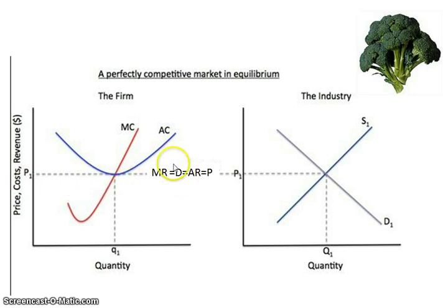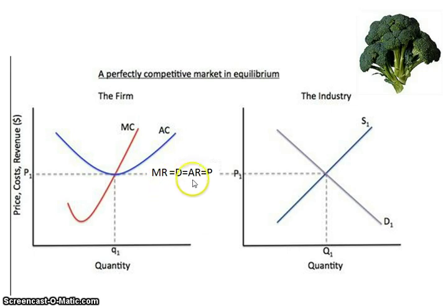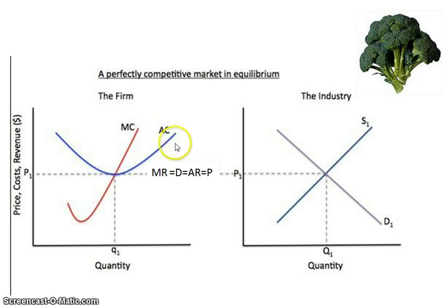The best way to represent your demand curve — and one that I expect to see on any FRQ, or it will be marked down for not being labeled completely right — is to have MR=D=AR=P represented along that curve. So you have marginal revenue equals demand equals average revenue equals the price. You have your marginal cost curve, and then you also have your ATC curve. With that, you're able to see how the different cost curves and the demand curve interact to determine the efficiencies and the profit maximizing output.